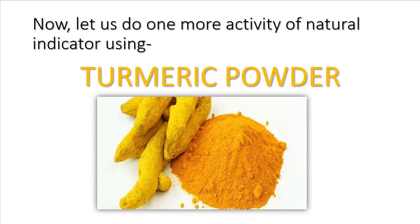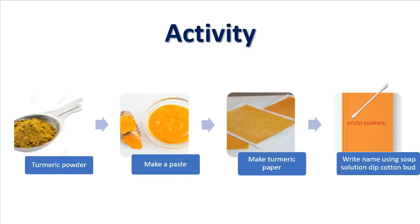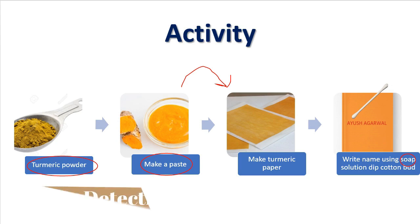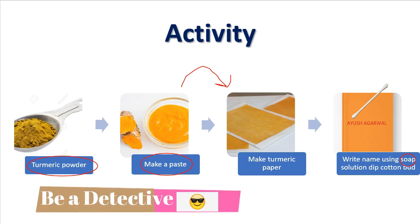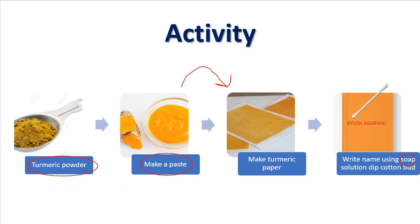Now let us move to our next natural indicator — turmeric powder, which is very commonly used in your household. We will do an activity to understand how turmeric paper works as a natural indicator. First, take turmeric powder and make it into a paste. Then apply this paste onto paper to make turmeric paper. Take a cotton bud dipped in soap solution and write your name on the turmeric paper. You can also use this to send secret messages to your friends!